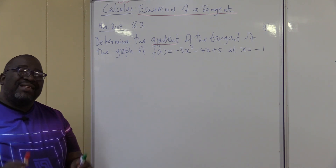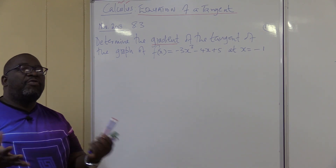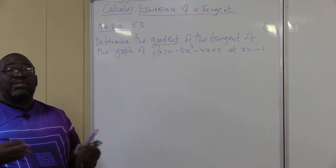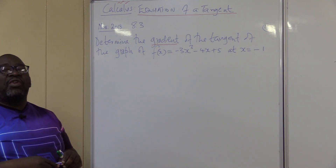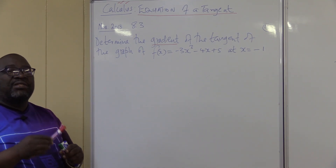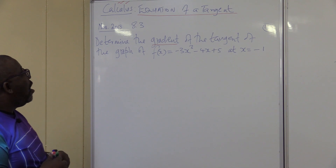What is a tangent? It is a straight line. So we should not be confused by these names. A tangent is nothing else but the straight line that touches that figure at one point.